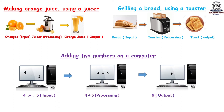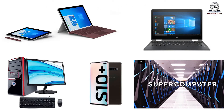Now let us see the third example: adding two numbers on a computer. Here 4 plus 5 are the inputs given to the computer. The processing happens inside the CPU, which adds 4 plus 5, and you get the answer 9 — that is the output.